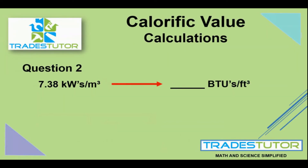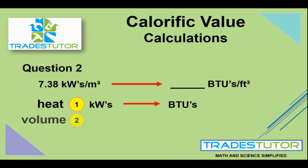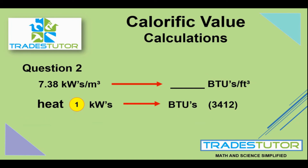Question two. We start with kilowatts per cubic meter and we're going back to BTUs per cubic foot. Same thing — two steps. Step one is the heat, kilowatts over to BTUs, which I always like to do first. Step two is volume, cubic meters down to cubic feet. Remember, we're getting smaller there. The two conversion numbers to remember are the same ones.